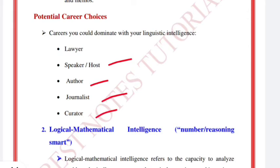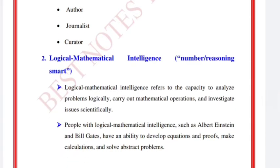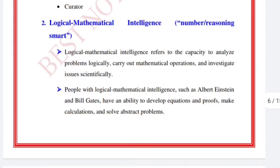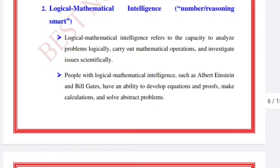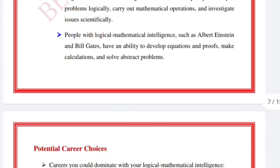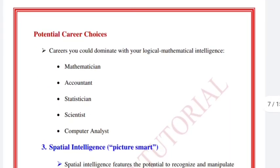Logical-mathematical intelligence, also called 'number smart' or 'reasoning smart,' refers to the capacity to analyze problems logically, carry out mathematical operations, and investigate issues scientifically. People with this intelligence, such as Albert Einstein and Bill Gates, can develop equations, make calculations, and solve abstract problems. Potential career choices include mathematicians, accountants, statisticians, scientists, and computer analysts.